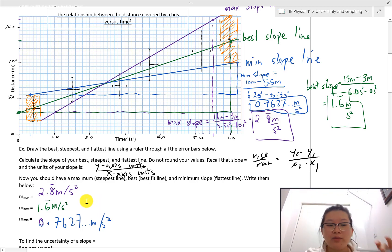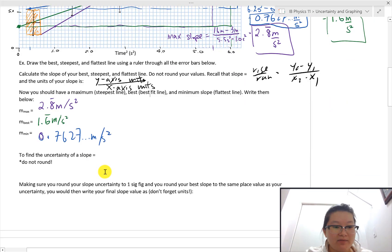And notice I did not round anything, because we haven't decided our uncertainties. So that's why we haven't done that.